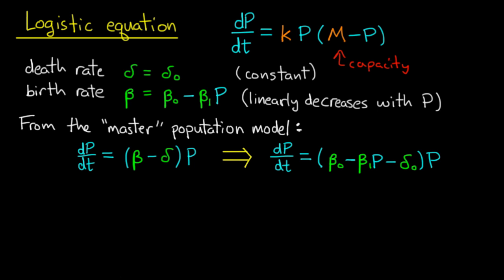Now recall the master population model that I introduced. That was dP/dt equals beta minus delta times P. Birth rate minus death rate times P. Now this was the model from which all the other population models could be derived, just plugging in different birth rates and death rates. So that's what we'll do here.